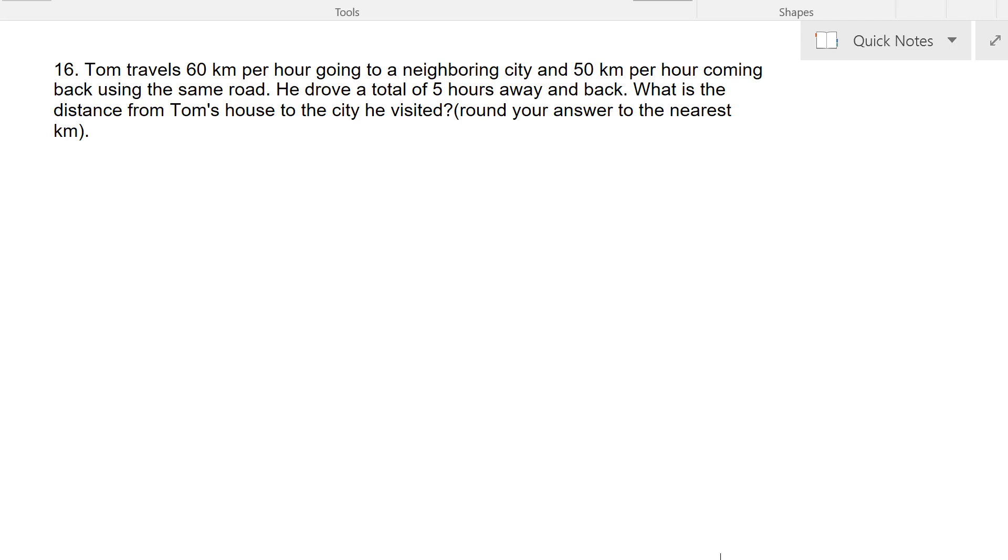Tom travels 60 km per hour going to a neighboring city and 50 km per hour coming back using the same road. He drove a total of five hours away and back. A really common mistake with this problem is to assume that he took 2.5 hours one way and 2.5 hours back, but that's not the case because he's traveling at different speeds.